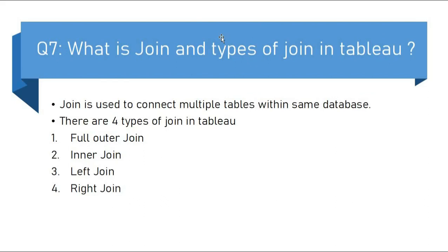The next question is: what is a join and what are the types of joins? A join is used to connect multiple tables within the same database. Suppose you have data in four to five tables and you want data from all of them — you can use a join to combine them. There are four types of joins: full outer join, inner join, left join, and right join.